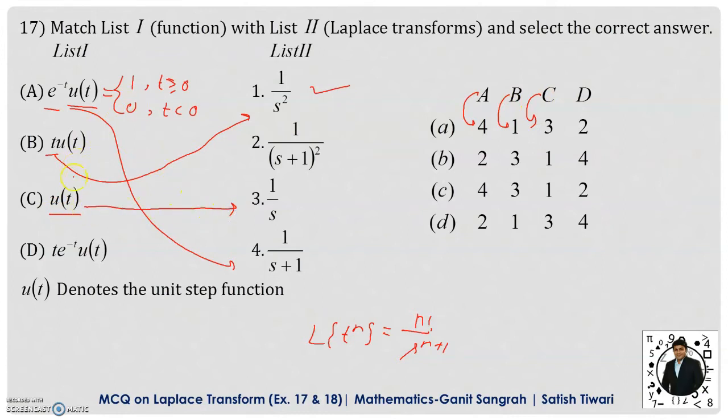Yes, it is true because finding the Laplace transformation of unit step function means finding the Laplace transformation of 1, and that is 1 by s. And the Laplace transformation of t times e to the power minus t u of t will be given by D mapped to 2. So therefore, this option is correct, that is option A.